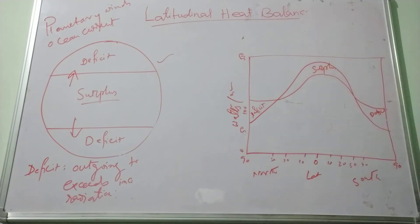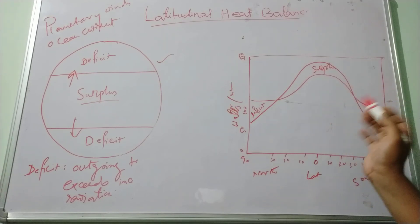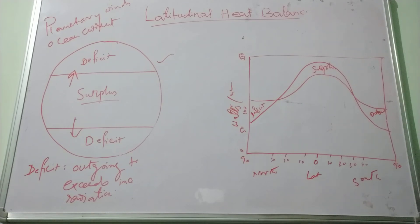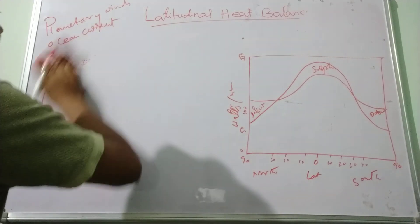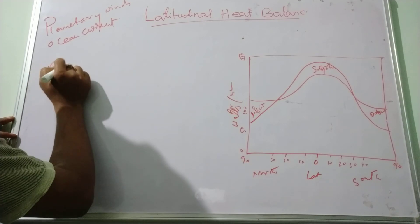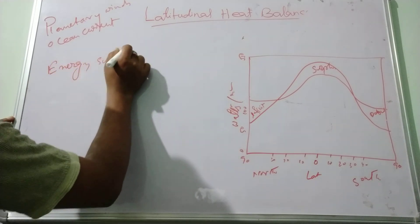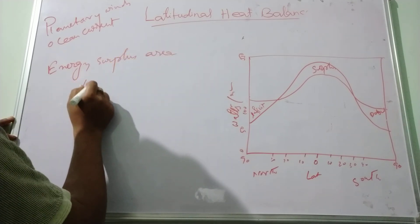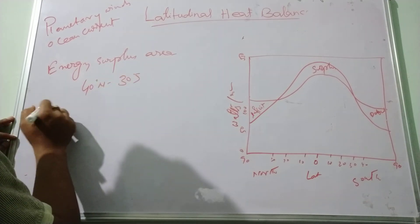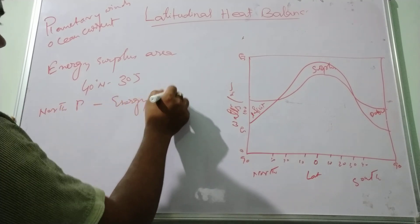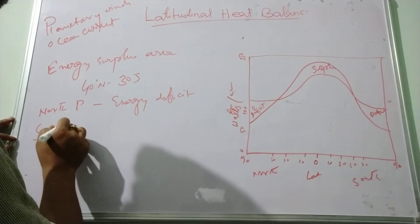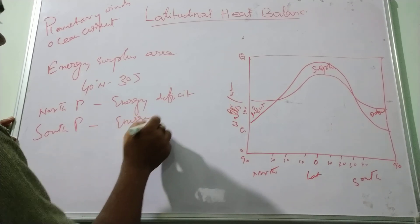When we take the atmosphere into consideration, the atmospheric zone works as a perennial energy deficit, because according to Hobbes, the atmosphere itself is an enclosure of radiation at all latitudes. So for the combined Earth's surface and atmospheric system, the energy surplus area lies between 40 degrees North to 30 degrees South, while the North Pole and South Pole regions are energy deficit areas.